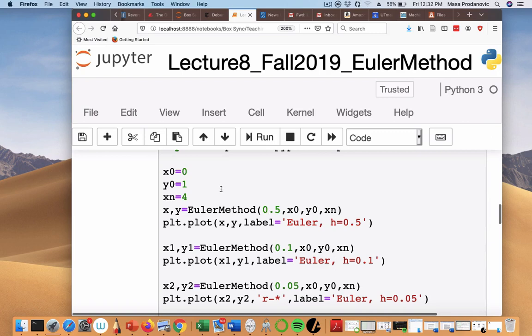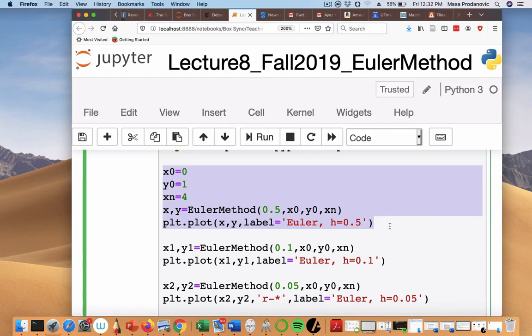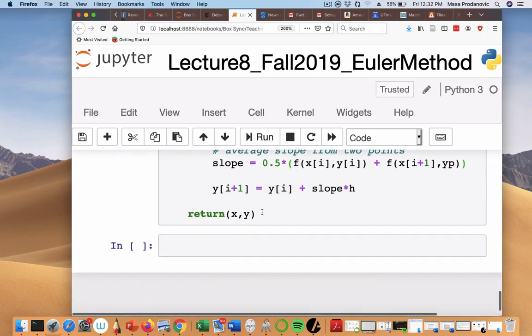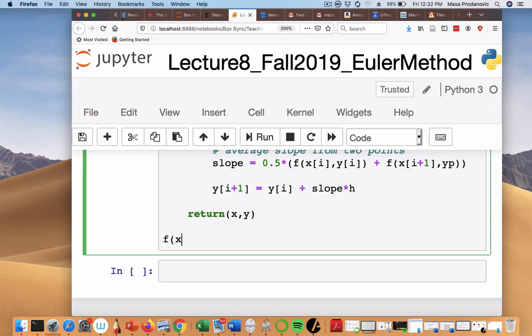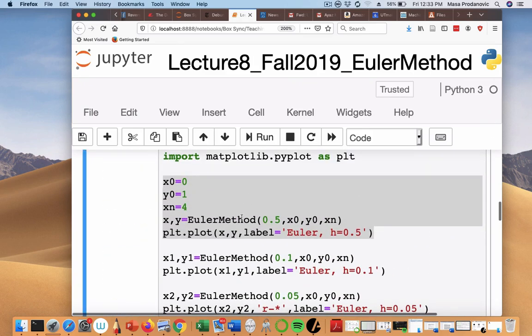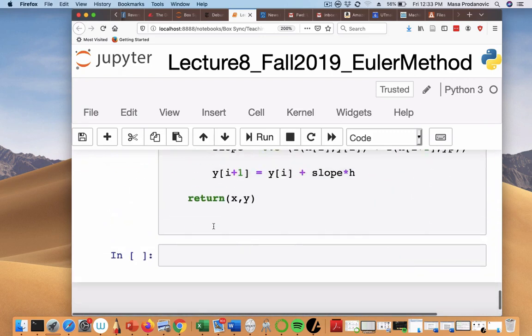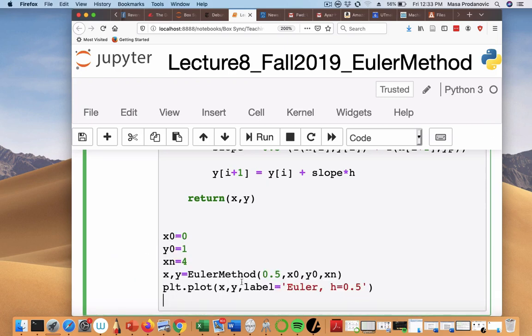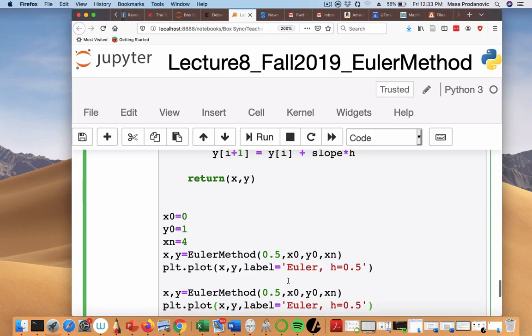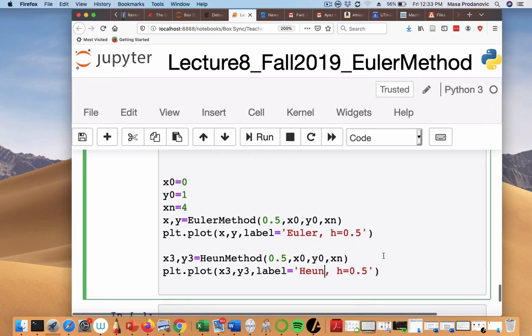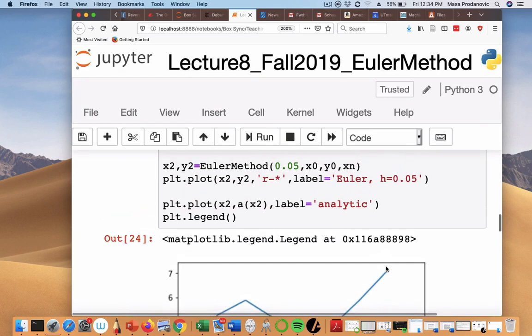Which h do we want to do, how about 0.5? That was pretty bad for Euler. There's Euler and I'm just gonna repeat this and do one and this is I'm gonna call it now x3, y3 and I'm gonna copy myself that analytic solution.